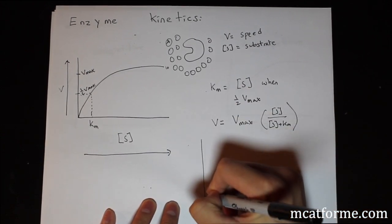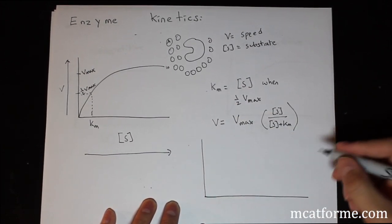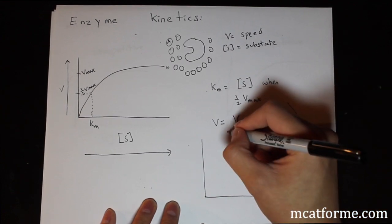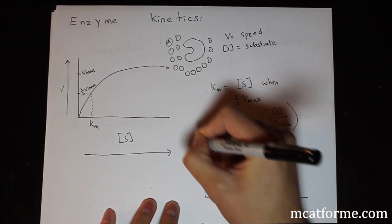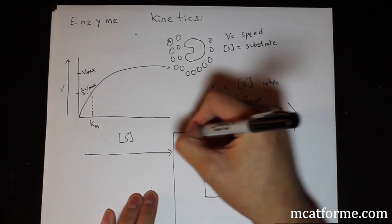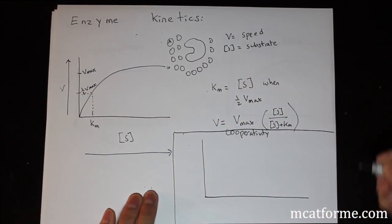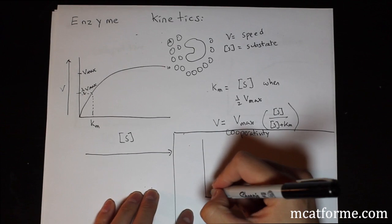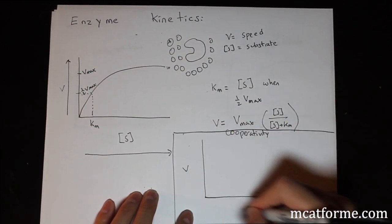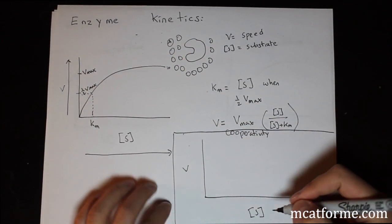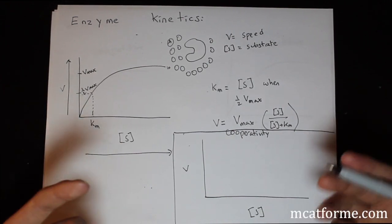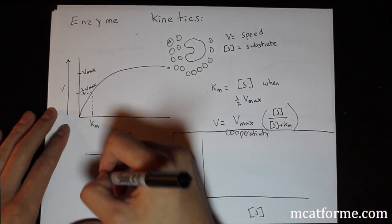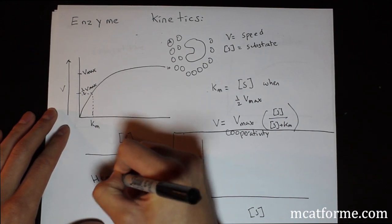But in addition to that, we have something that is cooperativity. So this is the same V versus S. Cooperativity is when you have multiple subunits and they interact together.